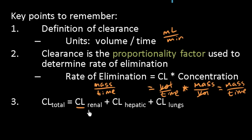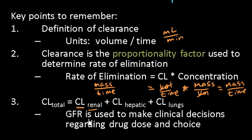The most important is renal clearance. At the kidney, the glomerulus filters blood of drug and excretes it. Clinically, we use the glomerular filtration rate — the GFR — to make decisions about drug dosages and drug choice. If a patient has less renal clearance, we might give less drug to avoid buildup of metabolites, or choose a drug that is cleared via the liver instead.